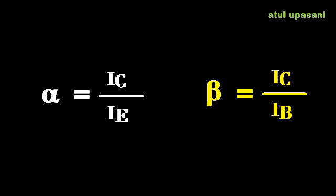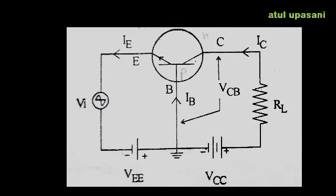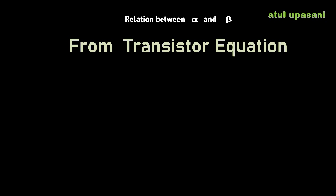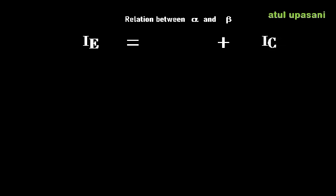Now, if a transistor is operated in one configuration and needs to be used in another, the current amplification factors change. We need to study the relationship between alpha and beta — that is, if a transistor is in common base and we need to use it in common emitter, we need to know the relation. The transistor equation is IE = IC + IB. For small changes: ΔIE = ΔIB + ΔIC.